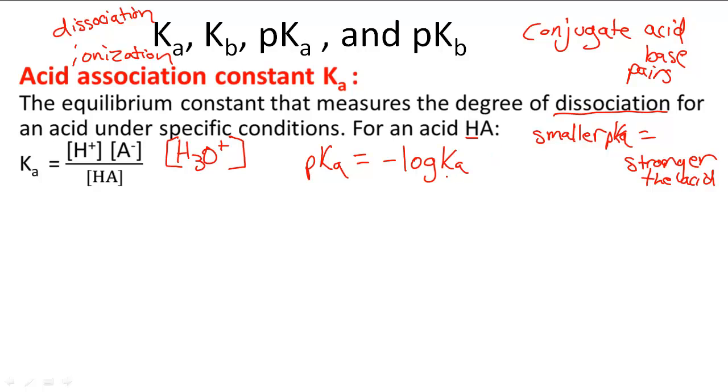Basically if Ka is bigger, is much bigger, then pKa is going to be smaller and make a stronger acid.